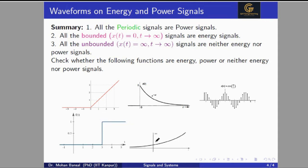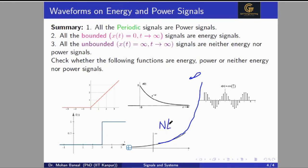The fifth signal is moving towards infinity. As we increase t towards infinity, it goes beyond the limit and will be infinite after t tends to infinity. So at t tending to infinity, x(t) is infinite — this is an unbounded signal. Therefore this signal is neither energy nor power signal.